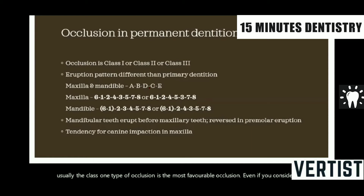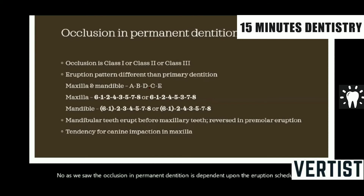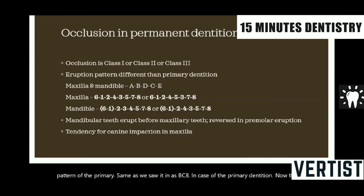As we saw, the occlusion in permanent dentition is dependent upon the eruption schedule or pattern of the primary, same as we see it in case of the primary dentition. The eruption pattern in case of the permanent dentition is slightly variable. The first to erupt are the molars, followed by the central and lateral incisors.